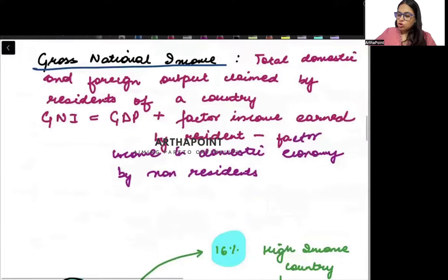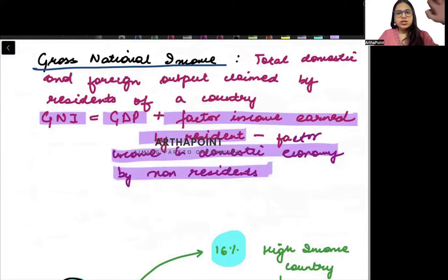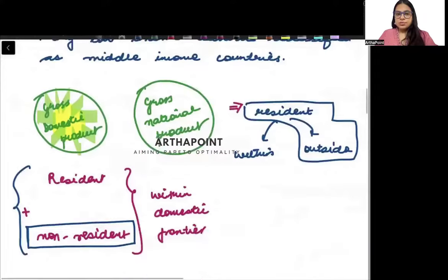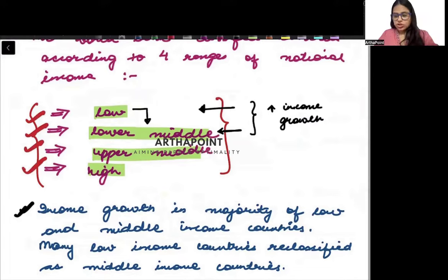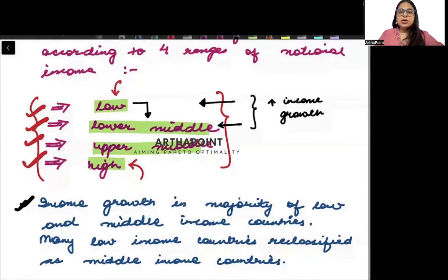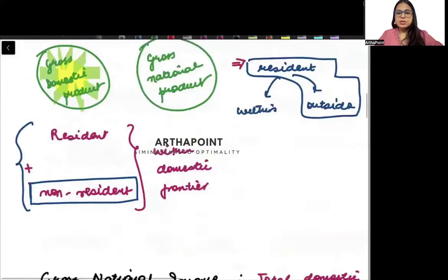So Gross National Income is: GDP plus factor income earned by residents living outside the country, minus factor income earned in the domestic economy by non-residents. On the basis of this national income, I am classifying the four kinds of economies. Countries with very low national income are given the low income classification, and those with very high national income are given the high income classification.